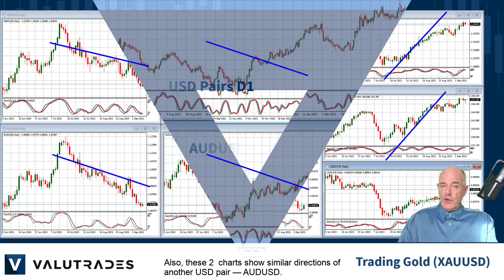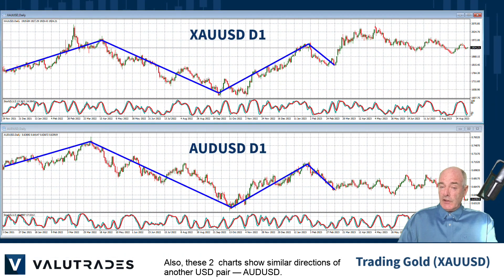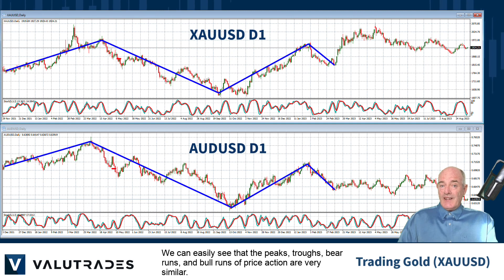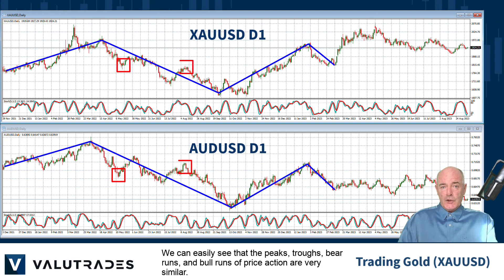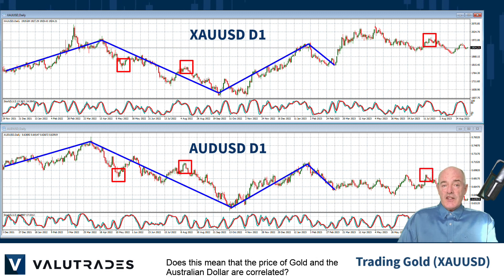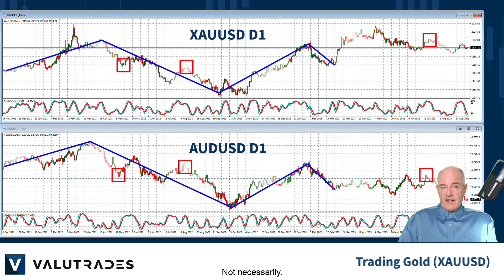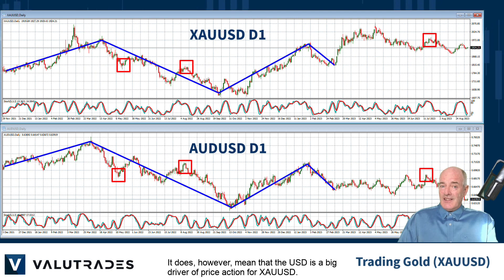Also, these two charts show similar directions of another pair, Aussie dollar. We can easily see that the peaks, troughs, bear runs and bull runs of price action are very similar. Does this mean that the price of gold and the Australian dollar are correlated? Not necessarily. It does however mean that the US dollar is a big driver of the price action for XAU USD.